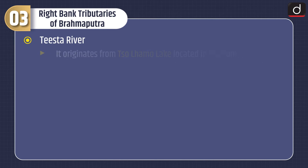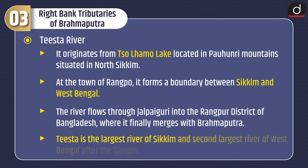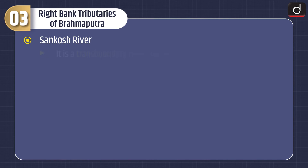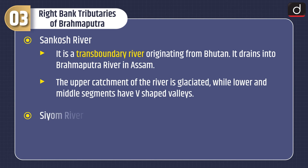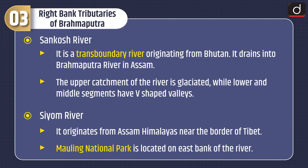Next is the Tista river. It originates from Sol Lhamo Lake in the Pohundri Mountains of North Sikkim. At the town of Rangpur, it forms a boundary between Sikkim and West Bengal. The river flows through Jalpaiguri into the Rangpur district of Bangladesh, where it finally merges with the Brahmaputra. Tista is the largest river of Sikkim and the second largest river of West Bengal after the Ganges. Next, the Sankosh river is a trans-boundary river originating from Bhutan; it drains into the Brahmaputra in Assam, with its upper catchment glaciated and lower and middle segments having V-shaped valleys. The Siyom river originates from the Assam Himalayas near the border of Tibet; Malling National Park is located on the east bank of the river.